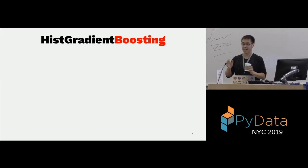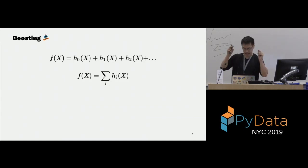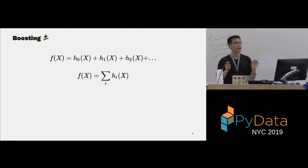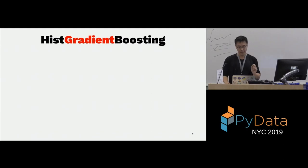Now we're here to talk about histogram gradient boosting. Boosting is a very generic machine learning term — it's where you want to approximate the F function as a summation of many different pieces of functions. There's many ways to boost; there's AdaBoost, but today we're talking about gradient boosting.